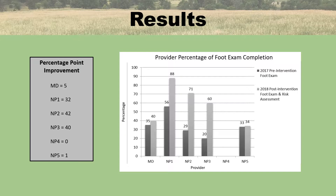Breaking down the data by provider: the medical doctor's percentage point improvement was 5 points from 35 to 40%. Nurse Practitioner 1 improved 32 points from 56 to 88%. Nurse Practitioner 2 increased by 42 percentage points from 29 to 71%. Nurse Practitioner 3 improved from 20 to 60%, a 40 percentage point improvement. NP4 did not participate because she resigned from the practice prior to completion of the quality improvement project. NP5 showed a 1 percentage point improvement from 33 to 34%.